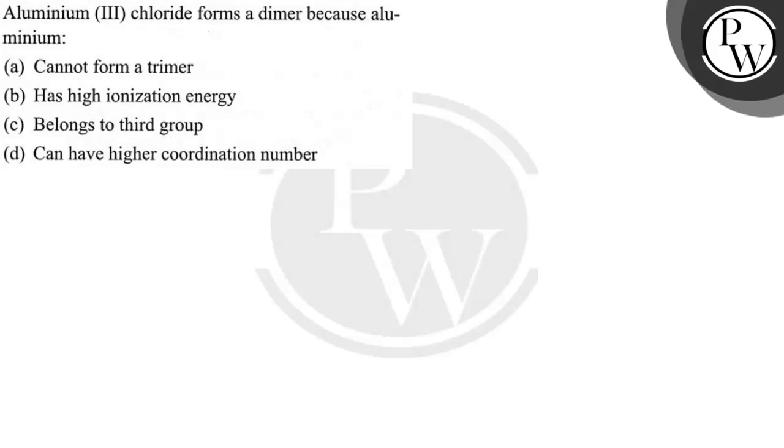Hello, let us see the question: Aluminium (III) chloride forms a dimer because... Aluminium chloride forms dimer. Let us check these options. Let us go one by one. First we need to see the concepts. What is the basic concept here?